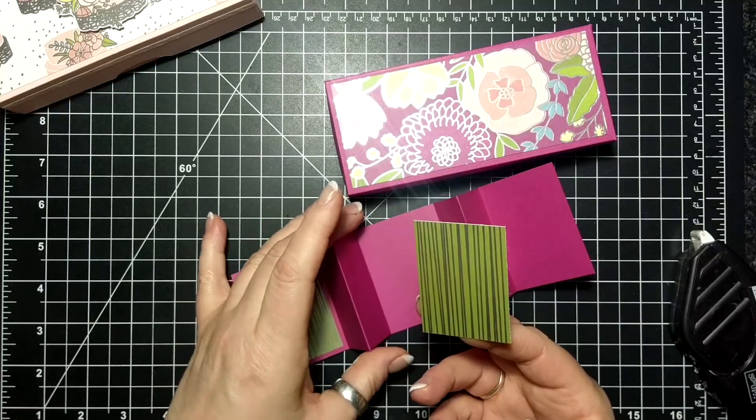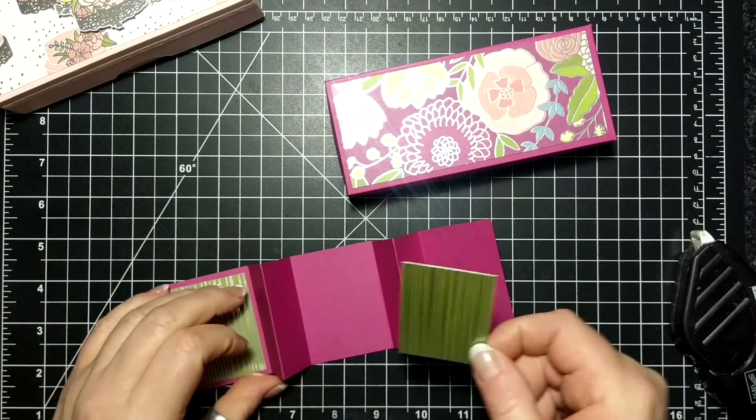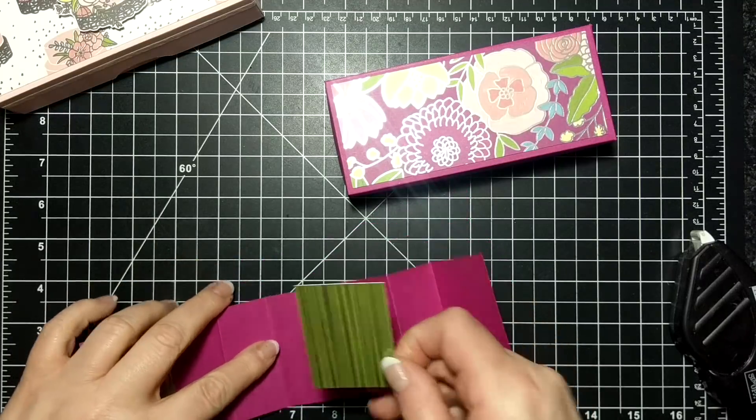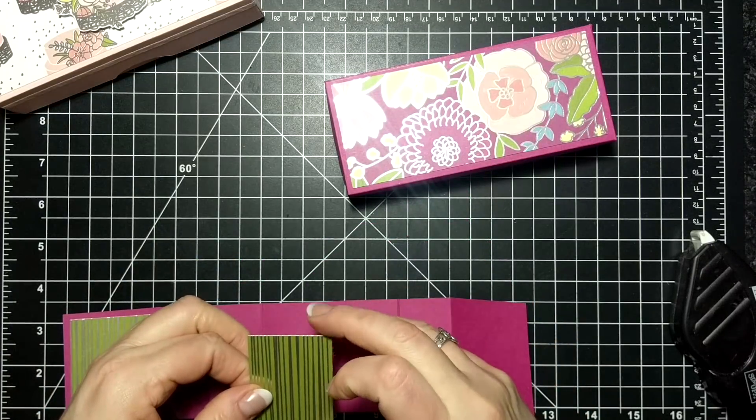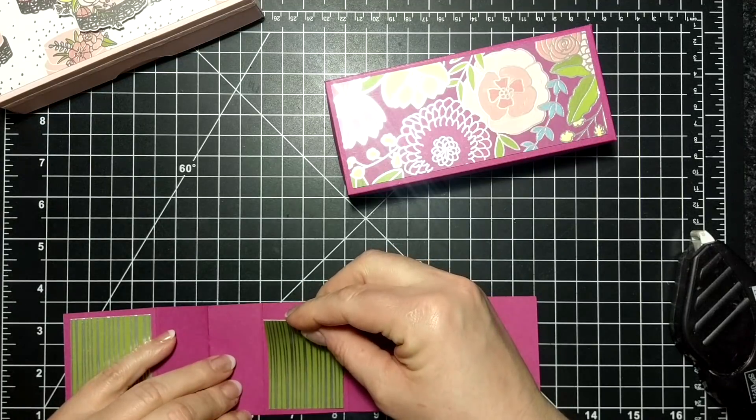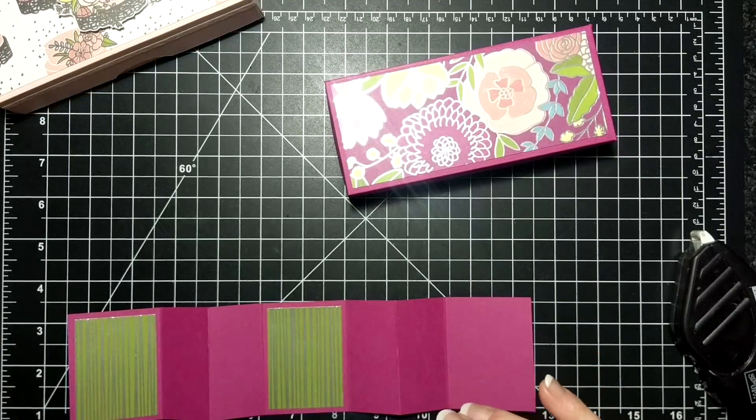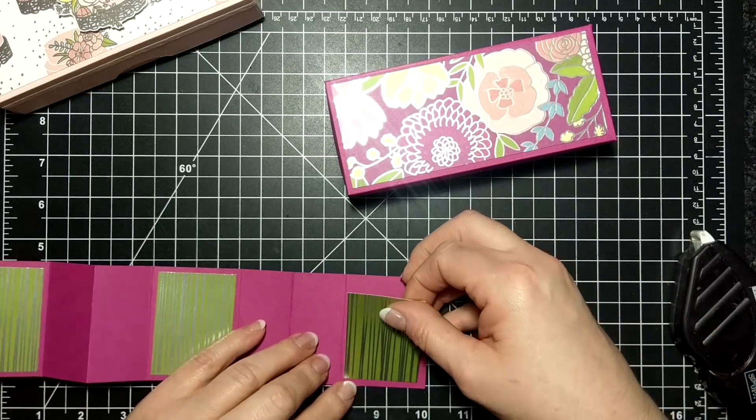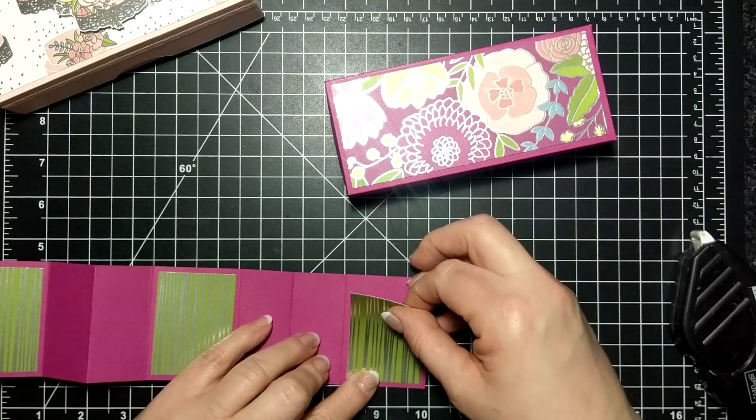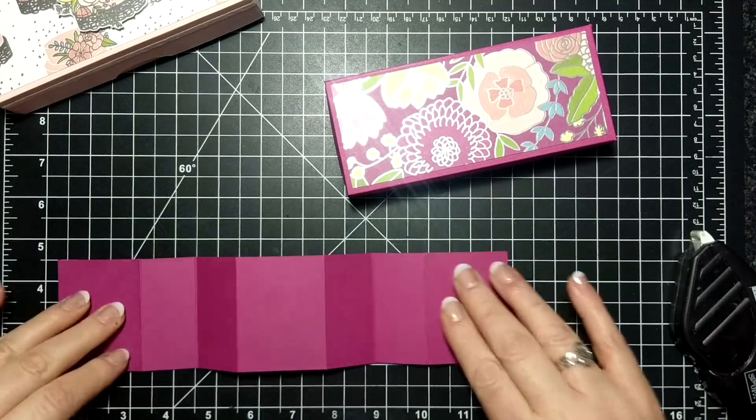And this is two and three eighths by one and three quarters, and so I'm just going to add these to our little squares. It's much easier to do this now than it is when the box is all together. It's harder to get these aligned correctly.